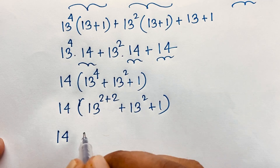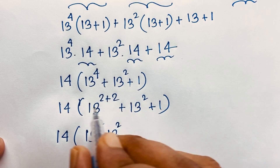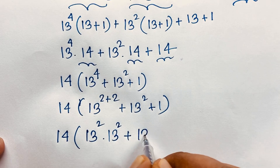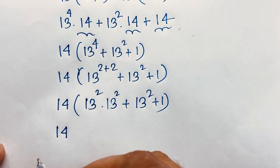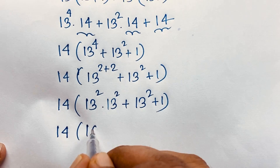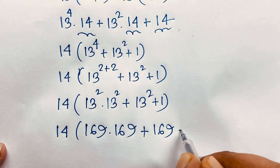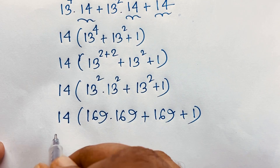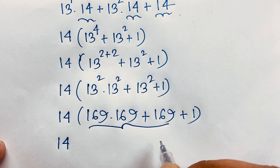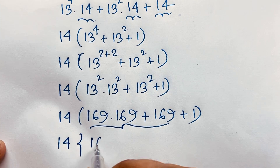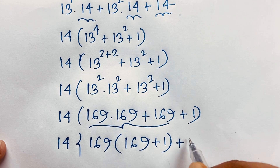Now, 14 times 13 power 2 — I apply this exponential formula again. This is 13 power 2, I separate this exponent — this is 13 power 2 plus 1. Then this is 14. I solve this math question step by step. And this is 169 times 169 plus 169 plus 1. Now, you can see here 14 times, and here 169 is common. So if I take 169 as common, it will be 169 plus 1.